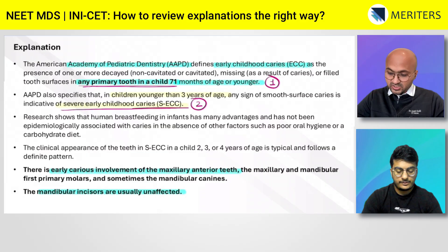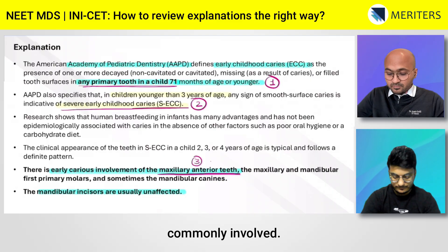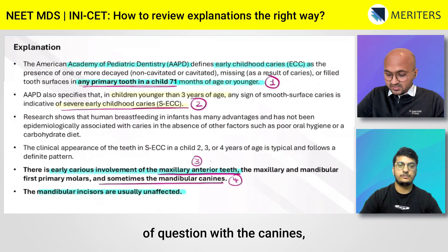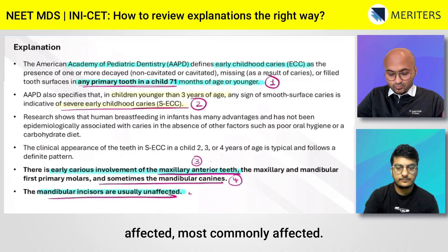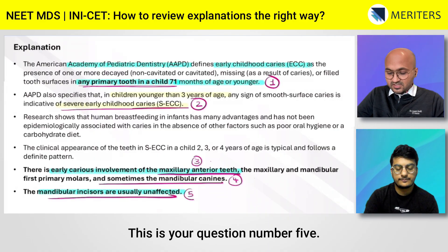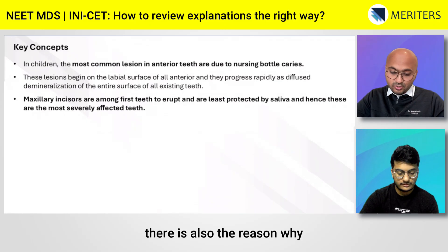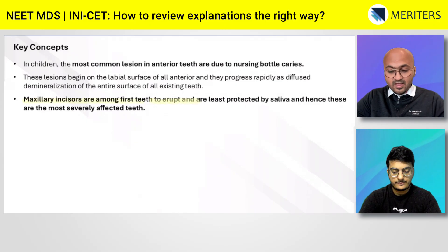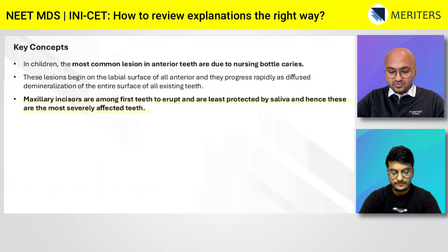Question three is the pattern of teeth involved — maxillary anterior teeth are most commonly involved. Then you can have a true-or-false type question about canines as question four. Mandibular incisors being the least affected is question five. And from the key concept, question six is the reason why maxillary incisors are affected first: they erupt first and are least protected by saliva.